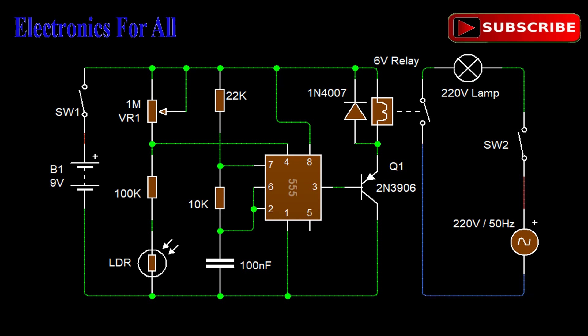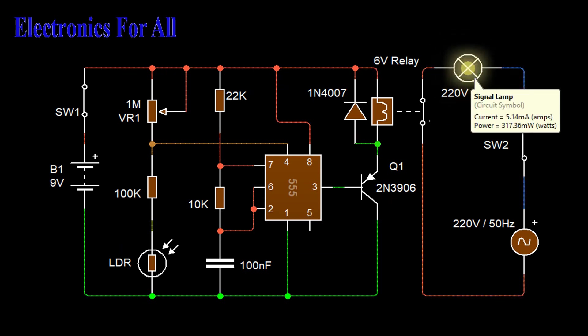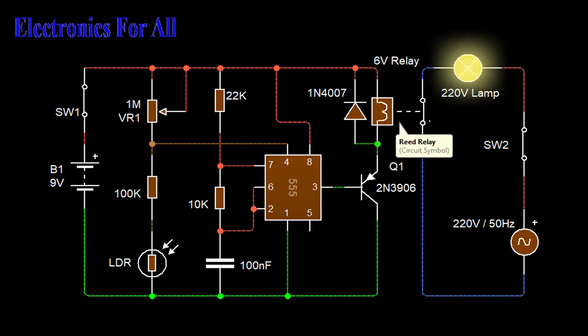In a normal astable vibrator, this pin is connected to plus 9 volt, but since in this case we are supposed to generate a pulse on the condition of absence of light, it is not connected directly to plus 9 volt. The resistor network provided at the reset pin provides a virtual ground to keep resetting the IC, and so the square wave output is stopped in the presence of light.